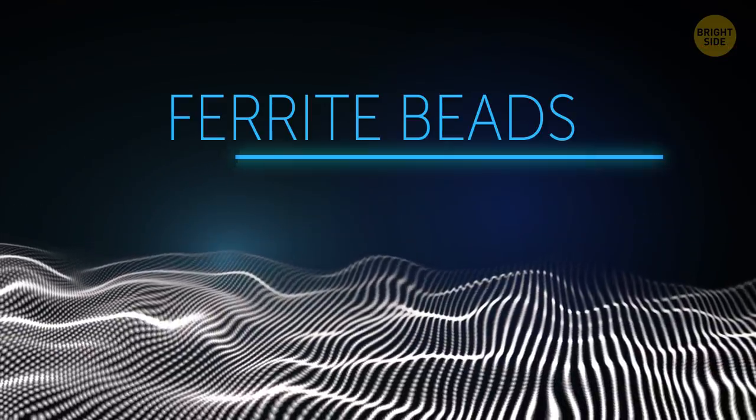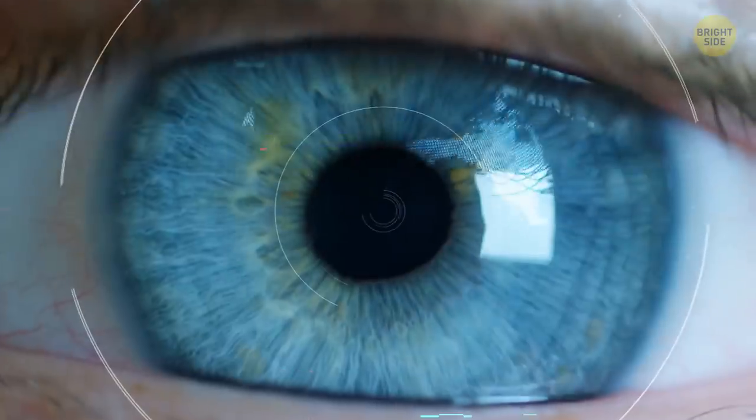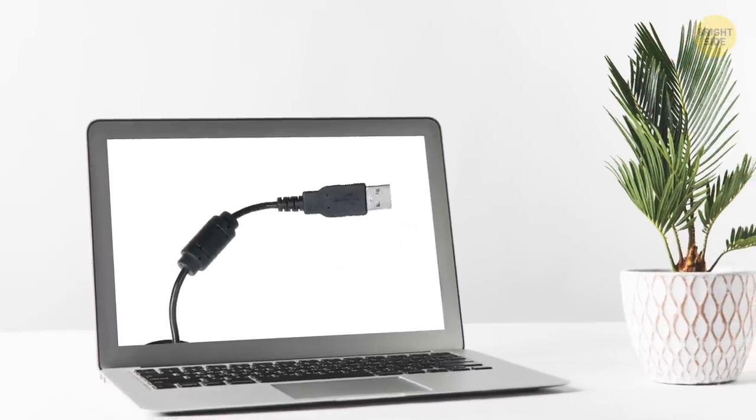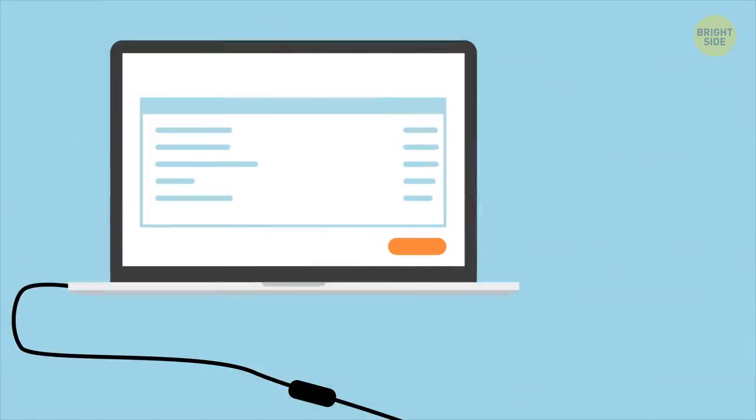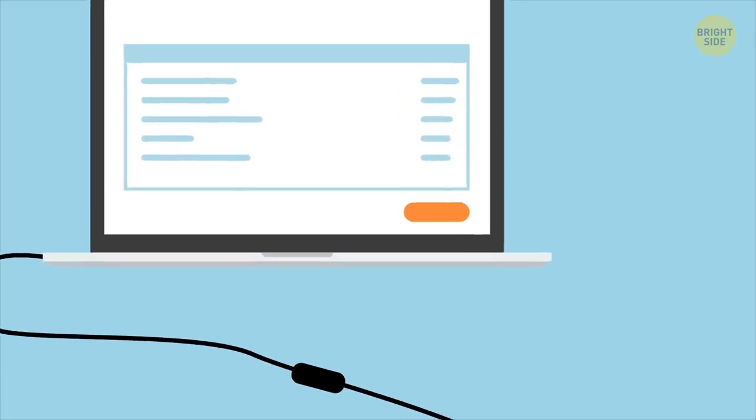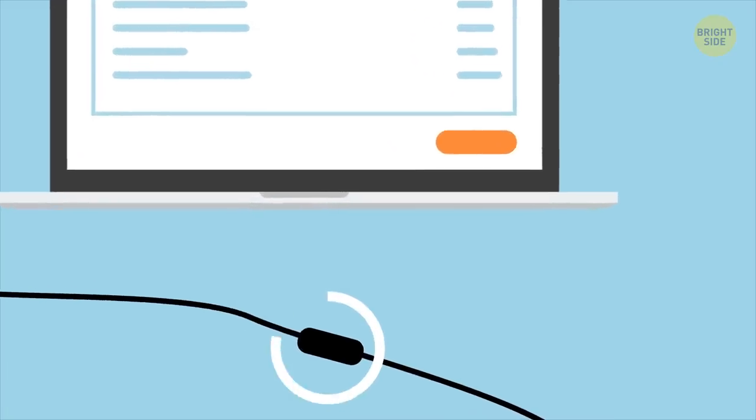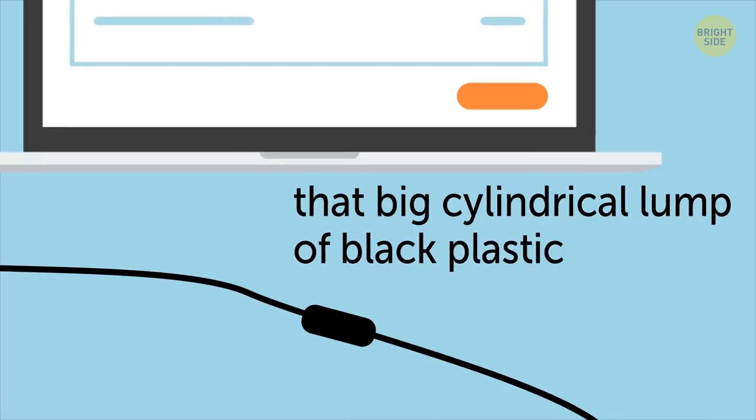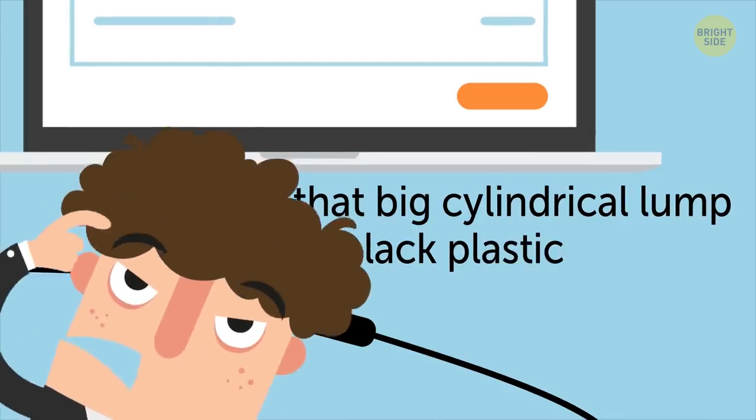Ferrite Beads. There might be just one ferrite bead around you right now. If you're in front of a laptop, just look at the end of its power cable near the plug. There it is, that big cylindrical lump of black plastic. Ever wonder what it's good for?